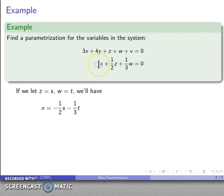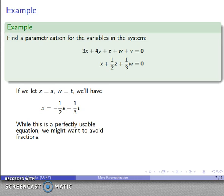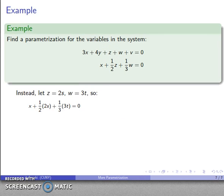This equation has variables x, z, and w. Maybe I'll pick z and w to be my parameters. I know that I'm taking 1 half z, 1 third w, so maybe I'll make z and w things I can take half and a third of very easily. Maybe I'll let z equals 2s, w equals 3t. I'll drop those into my equation. I get x plus s plus t equals 0, so x equals minus s minus t.